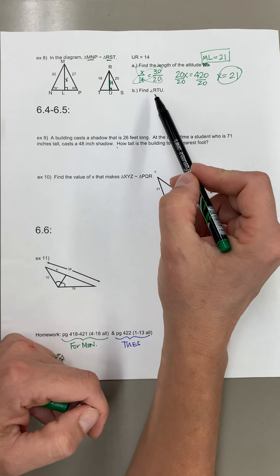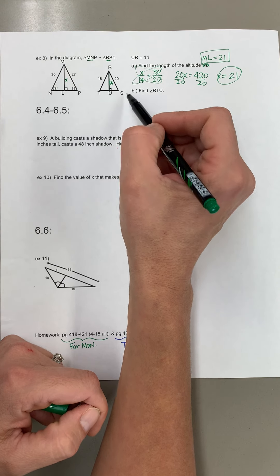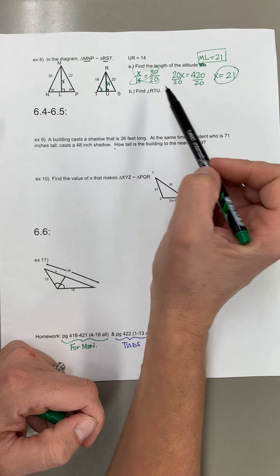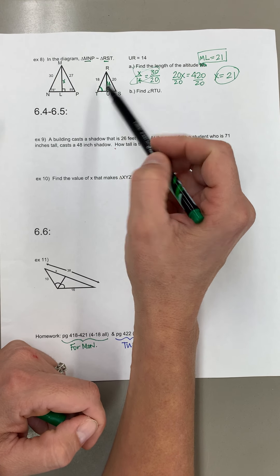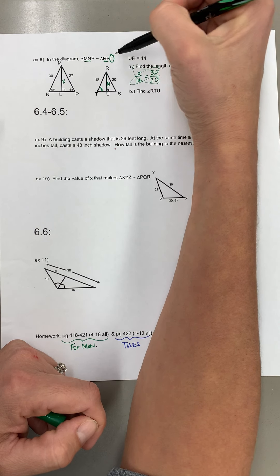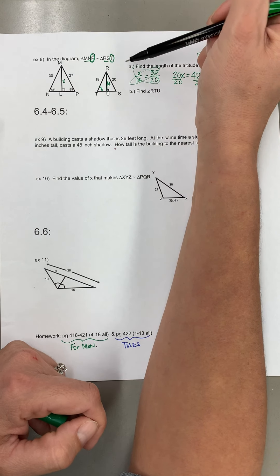And then they want the measure of angle RTU. RTU is here. So that angle, remember angle sides are proportional but angles should be equal. So since T is here in the name it should go with the same letter that's in the same spot so it should go with P.